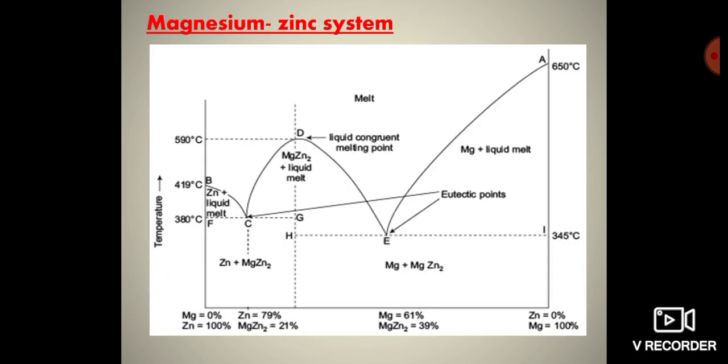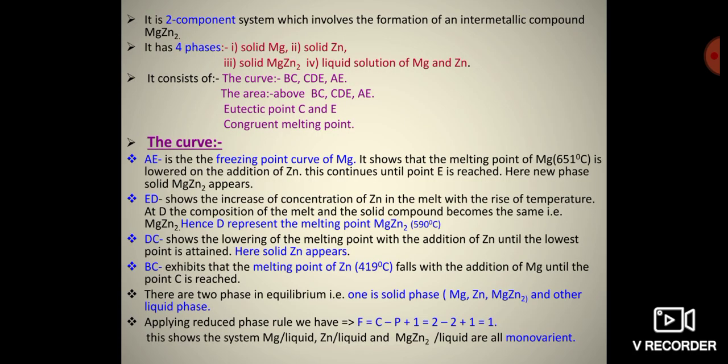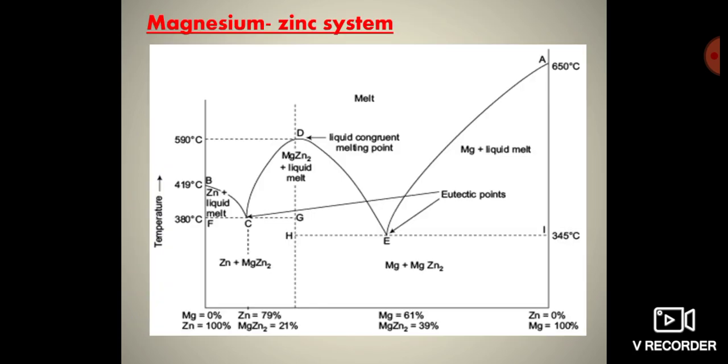There are two eutectic points at C and E. The congruent melting point is present at D.